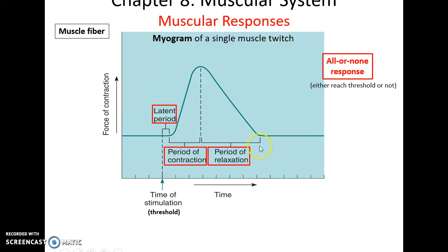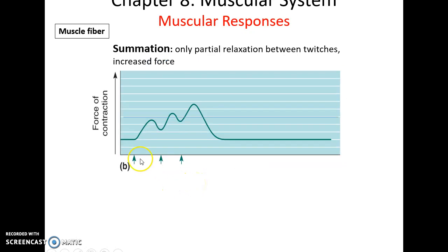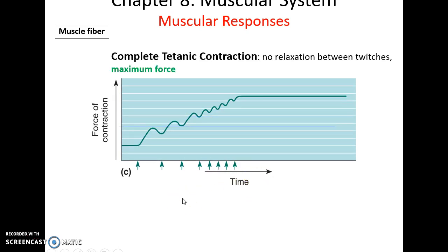A muscle twitch refers to muscles contracting. A myogram measures the amount of force generated from a muscle fiber as it contracts over time. First, threshold is reached; then there is a slight latent period, after which the muscle fiber contracts, generating force, then relaxes. If a muscle is stimulated again before it has completely relaxed, the force generated increases more and more. Eventually, you get complete tetanic contraction — the stimulus is happening rapidly enough that the muscle contracts continuously at maximum force until it fatigues.